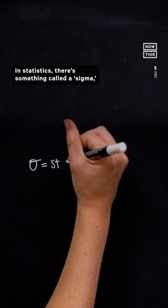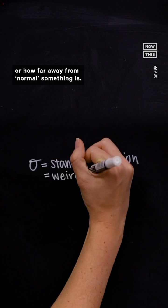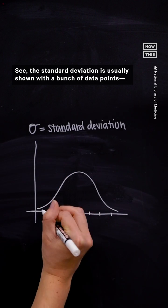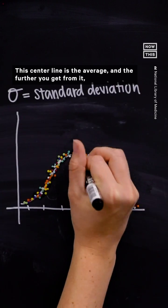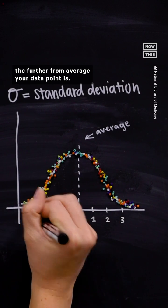In statistics, there's something called a sigma, which is another way of saying standard deviation, or how far away from normal something is. The standard deviation is usually shown with a bunch of data points, in this case beads along a bell curve. This center line is the average, and the further you get from it, the further from average your data point is.